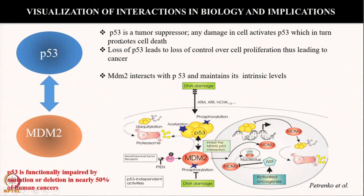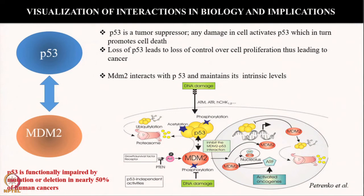We will now do a small exercise to learn about two very important molecules using molecular docking and see how important this visualization is for understanding several biological processes. We will learn about P53 and MDM2 interaction using molecular docking. P53 is a tumor suppressor, and any damage in the cell activates P53, which in turn promotes the cell to die. If P53 is not present, it can lead to cell proliferation and cancer. In the cell there is another interacting partner of P53 called MDM2, which normally regulates the level of P53 in the cell, thereby keeping a tab on cell functioning.